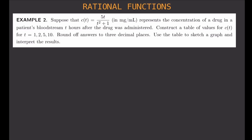C of T equals 5T over T squared plus 1, in milligrams per milliliter, represents the concentration of a drug in a patient's bloodstream T hours after the drug was administered. Construct a table of values for C of T for T equals 1, 2, 5, and 10. Round off answers to three decimal places. Use the table to sketch a graph and interpret the results.